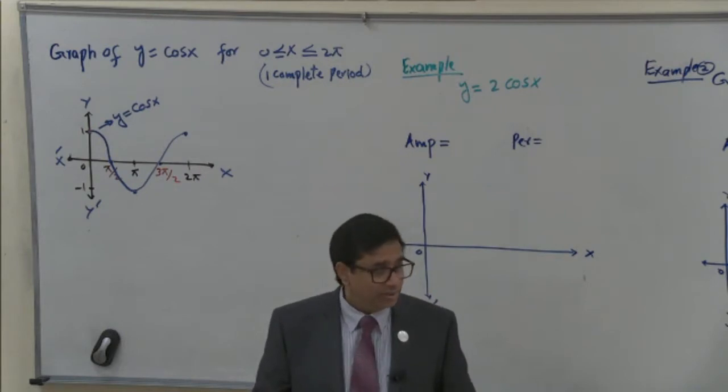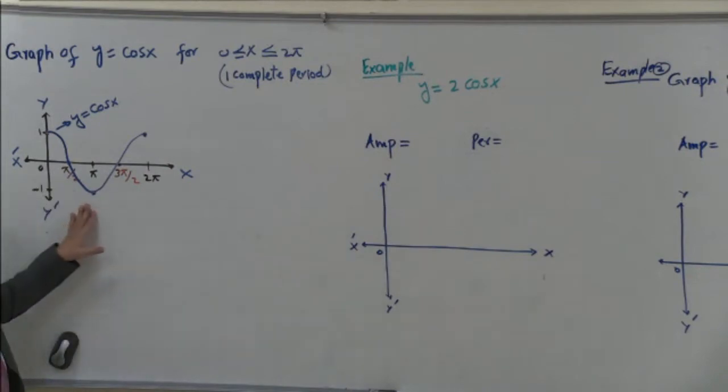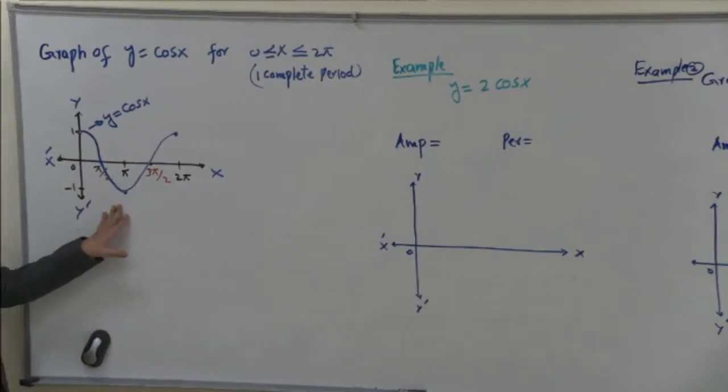And for cosine function graph, we must know its basic graph. Where is the basic graph of this function? Here. 0 to 2π. Middle point.